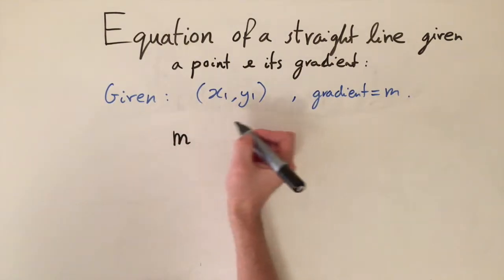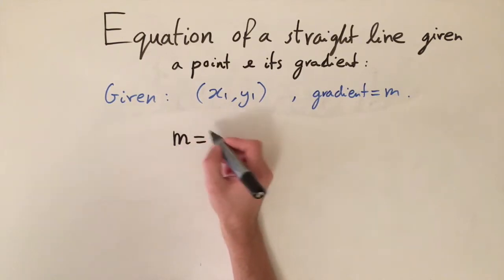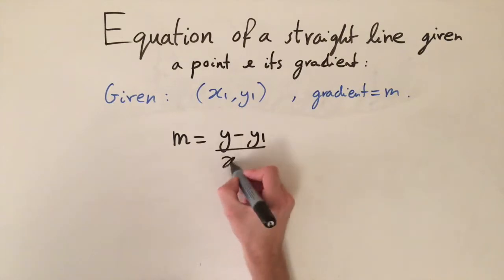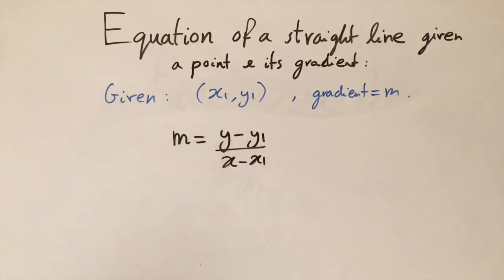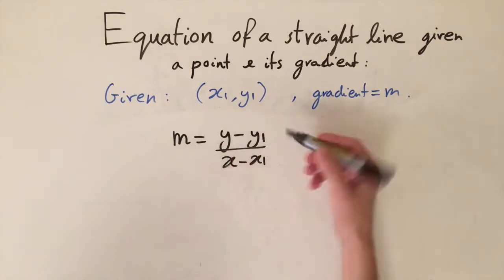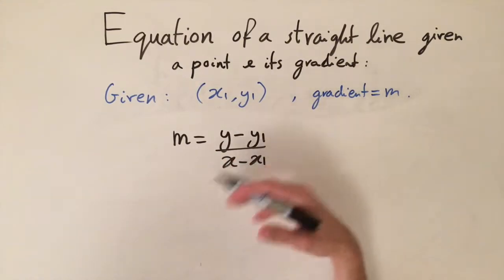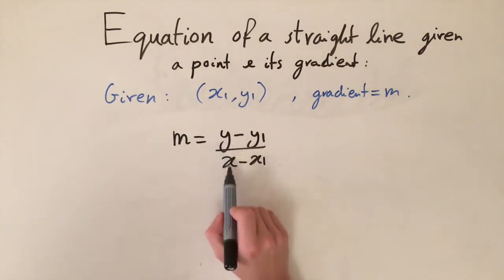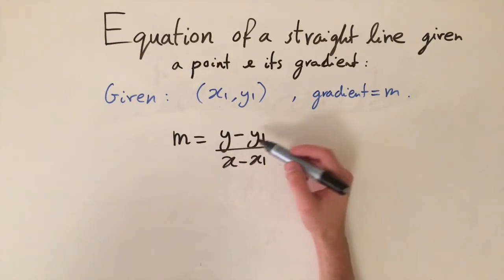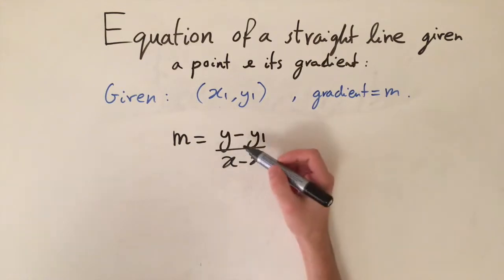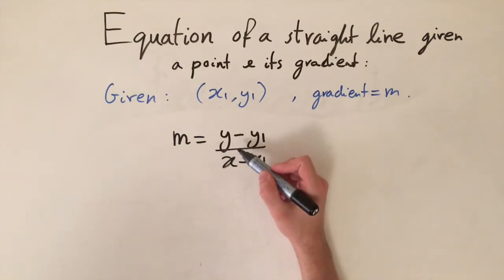The formula looks like this: the gradient m equals y minus y1 over x minus x1. What this is really saying is that the gradient equals the change in y divided by the change in x, which is how we define the gradient. But this time we have y and x as variables inside the fraction — we know what x1 and y1 are, and instead of y2 and x2 we just replace them with the variable.